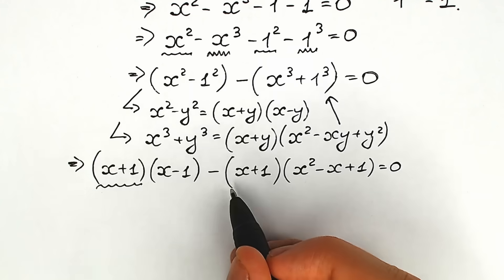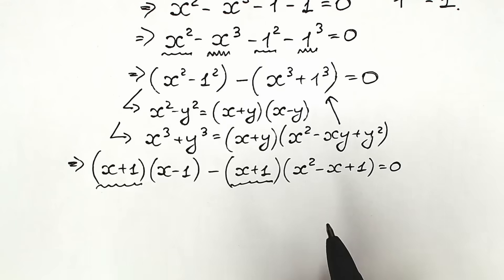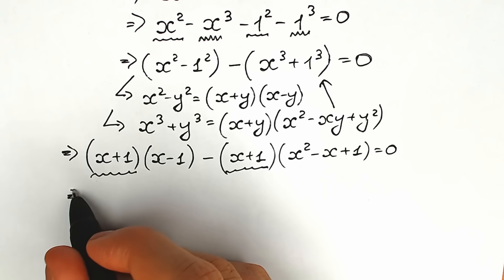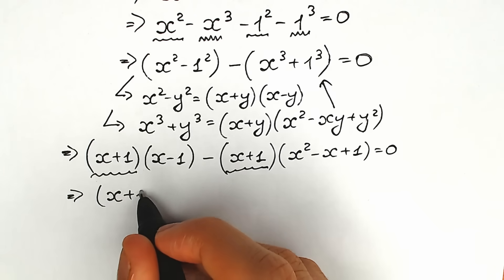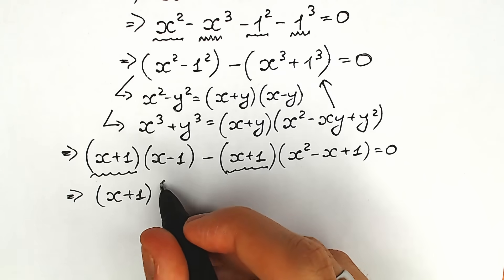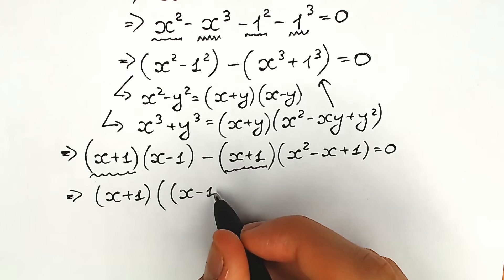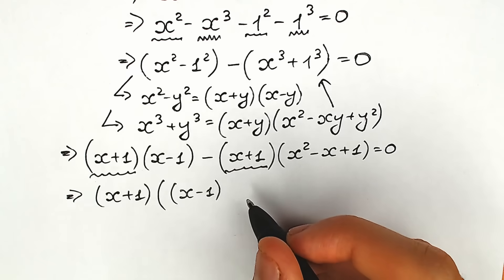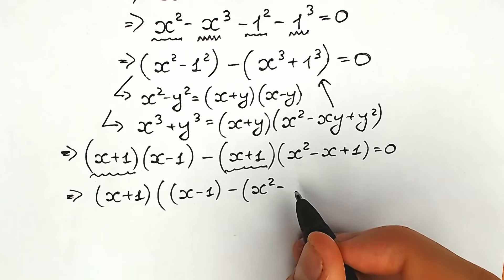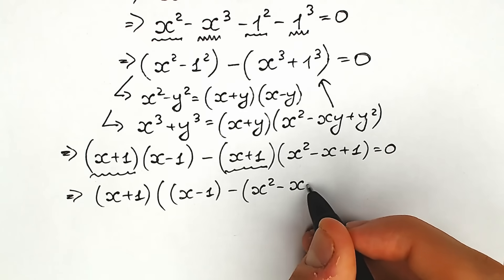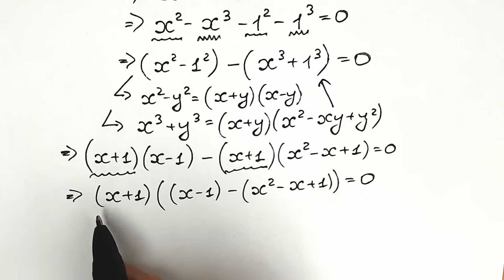We have (x plus 1) in the first part and (x plus 1) in the second part, so we factor out (x plus 1). As a result, we get (x plus 1) times [(x minus 1) minus (x squared minus x plus 1)] equal to 0.